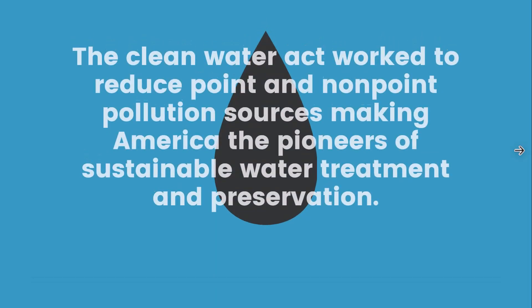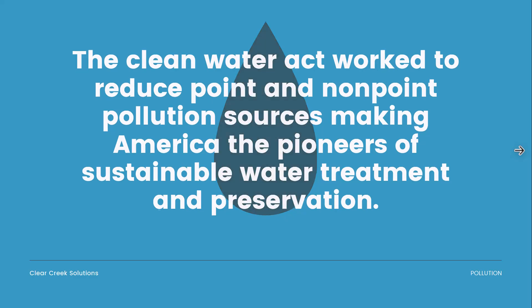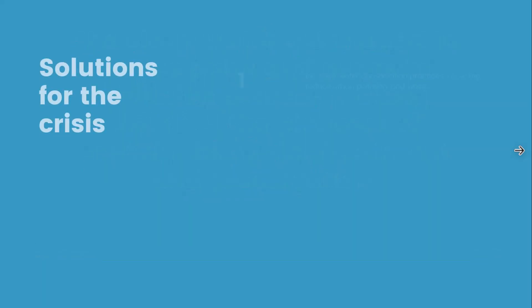It's not just urban environments — even rural environments struggle with stormwater pollution. The Clean Water Act worked to reduce point and non-point pollution sources, making America a pioneer of sustainable water treatment and preservation. In the 1970s, America enacted the Clean Water Act to reduce both point and non-point pollution sources, improving water quality over the next five decades.